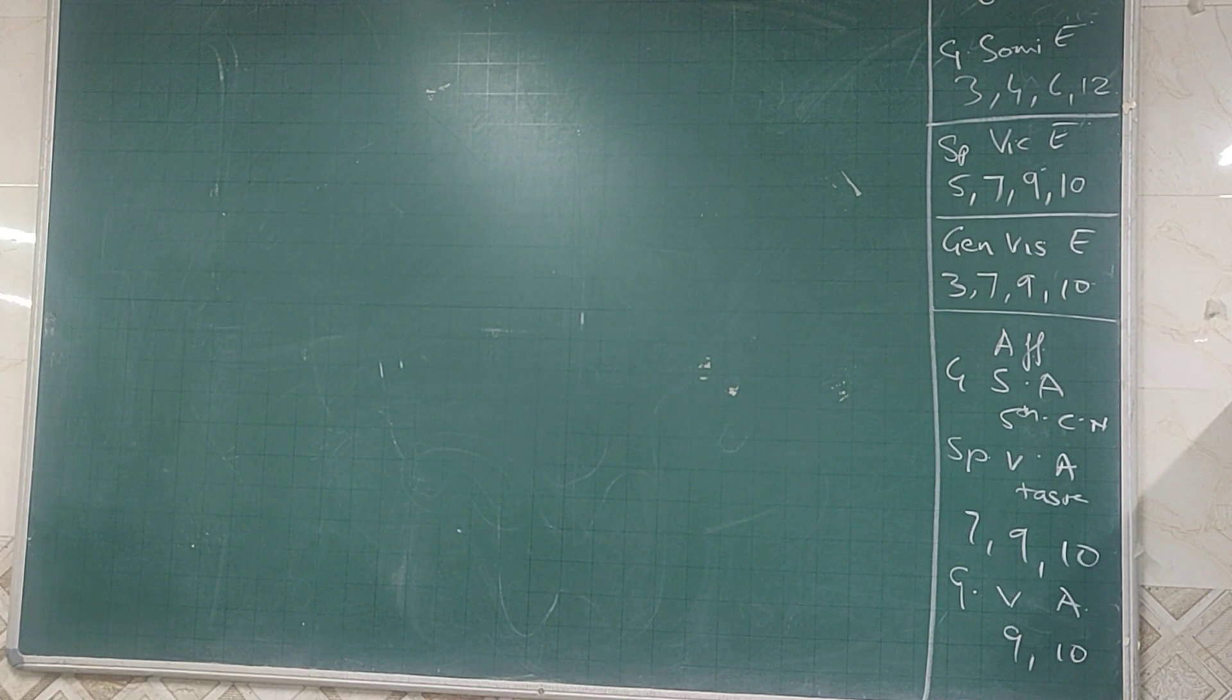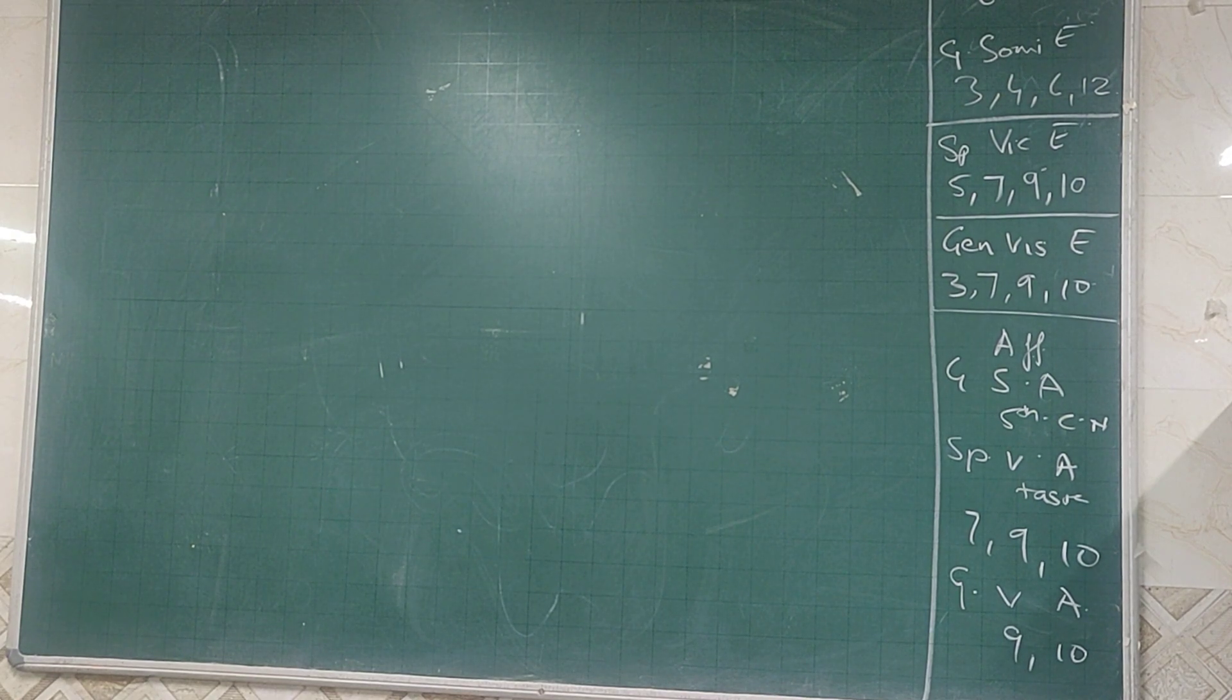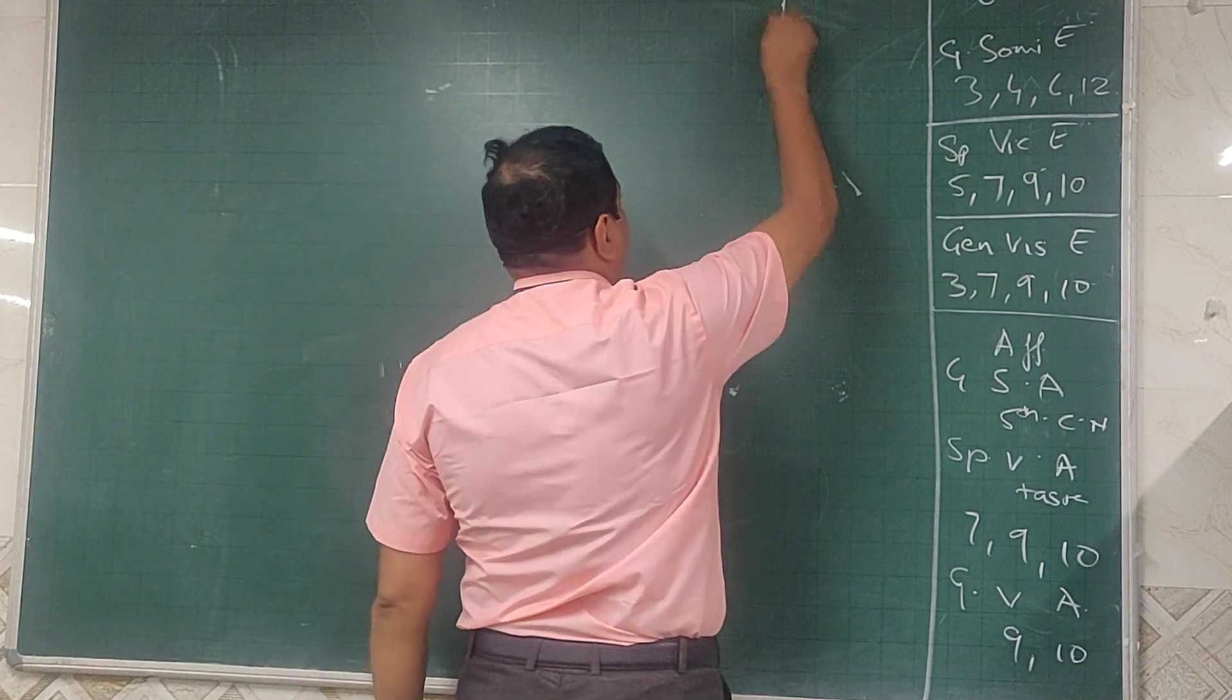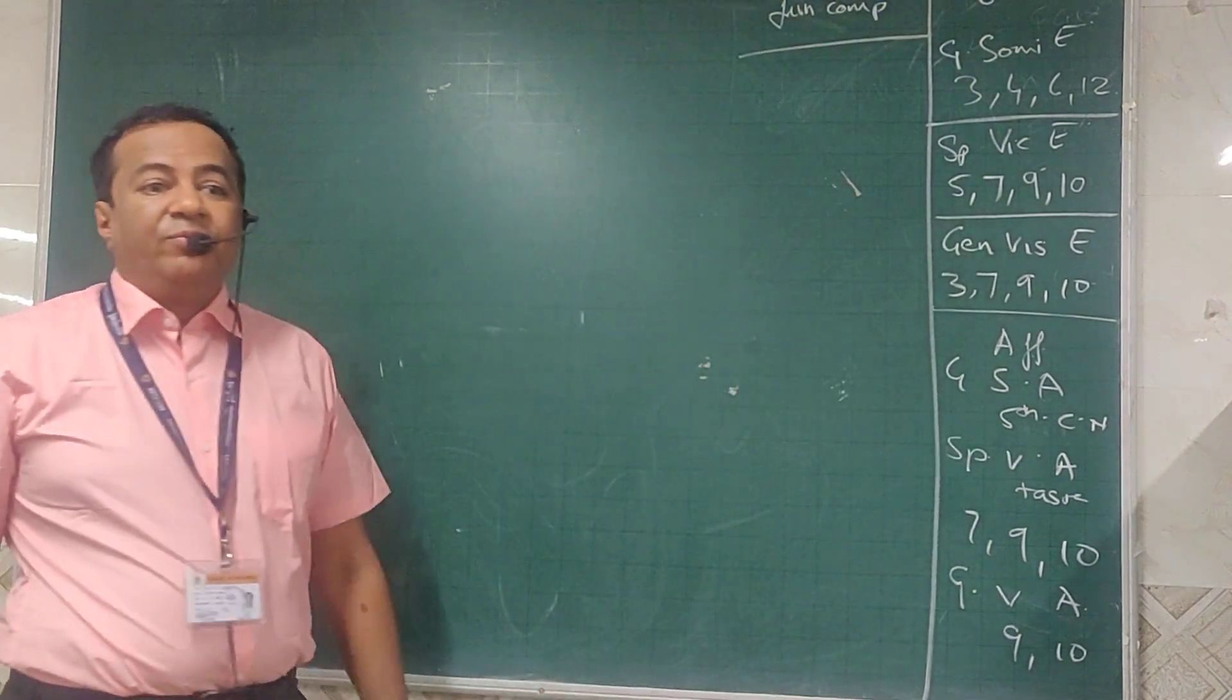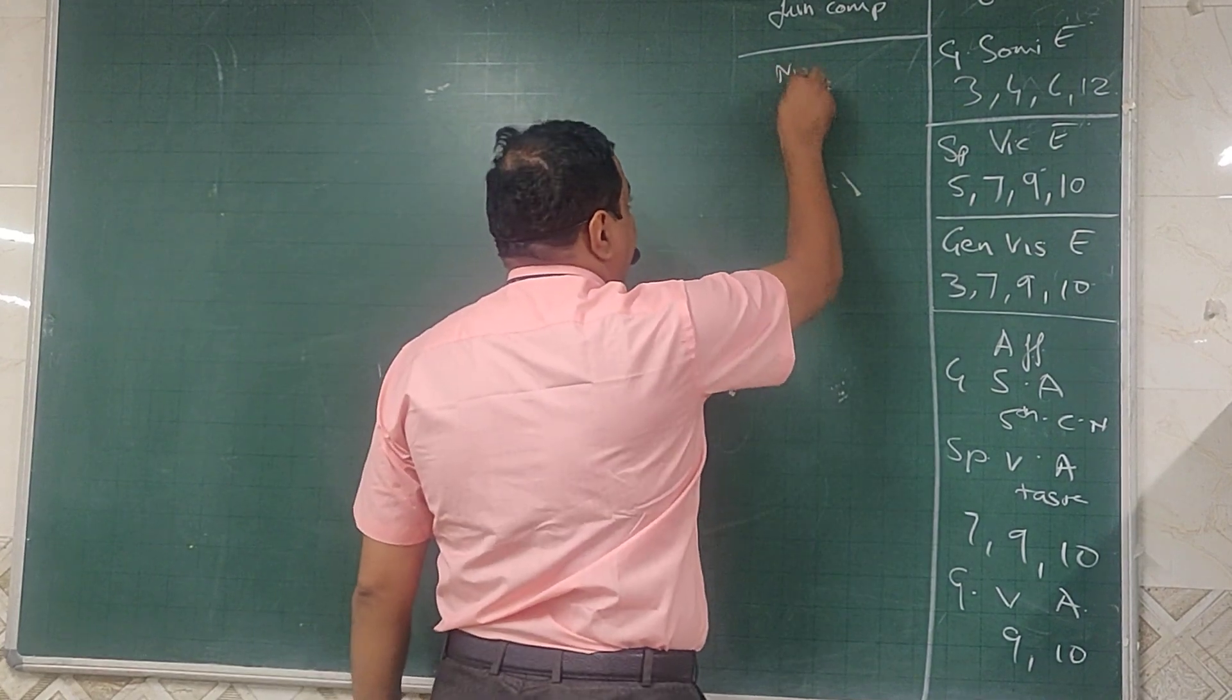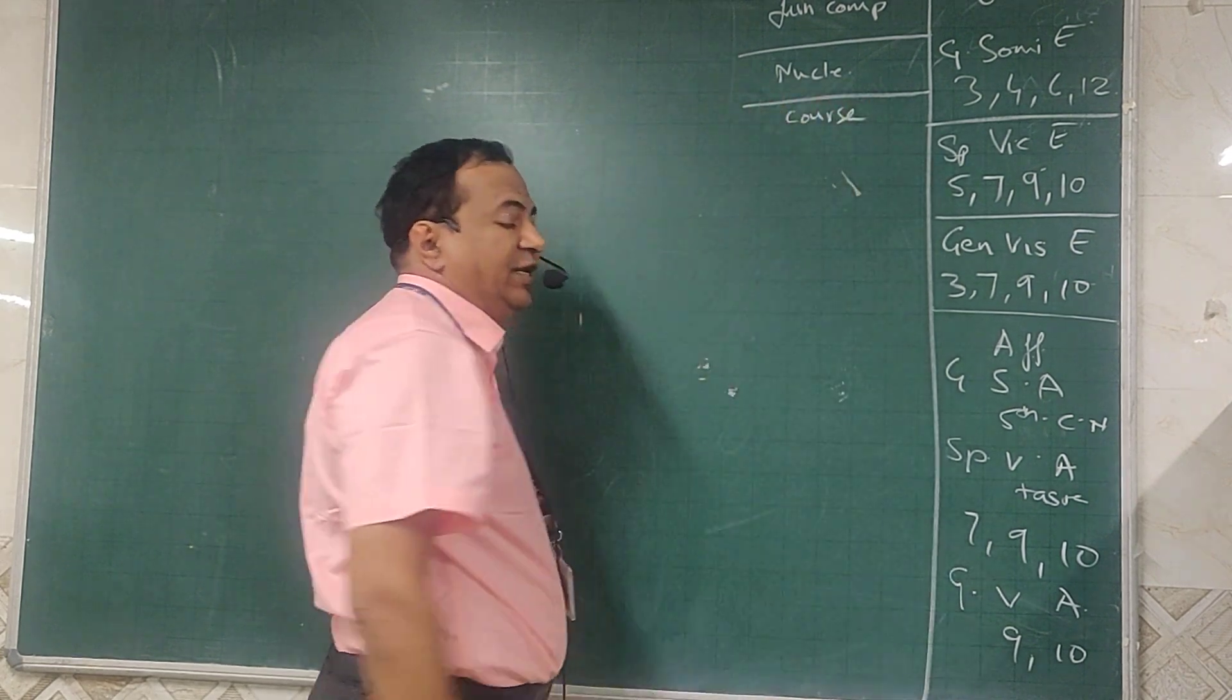So now we start with how you are going to write a cranial nerve. In the cranial nerve, we firstly write the functional components. After we write the functional components, then we talk about various nuclei in that nerve. Then we start about the course. How do we write the course of a cranial nerve?